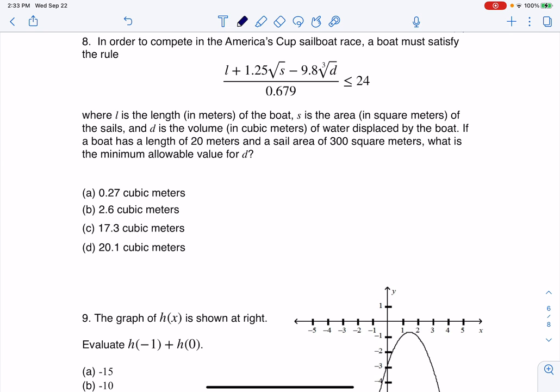Where L is the length in meters of the boat, S is the area in square meters of the sails, and D is the volume in cubic meters of water displaced by the boat. If a boat has a length of 20, that is going to be a number I'm going to want. There's my length value and a sail area of 300 square meters. What is the minimum allowable value for D?